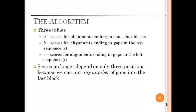The algorithm includes three tables A, B, and C. A is the score for alignment ending in a character-character block. B is the score for alignment ending in gap in the top sequence. And C is the score for alignment ending in gaps in the left sequence. Scores no longer depend on only three positions because we can put any number of gaps into the last block.